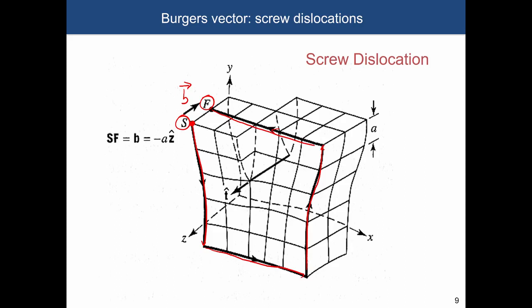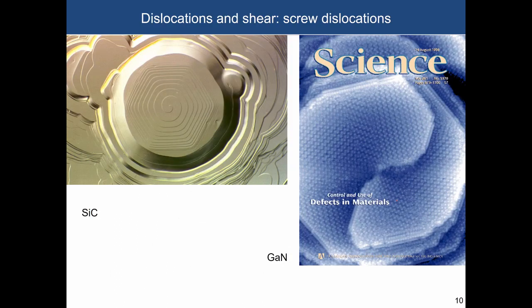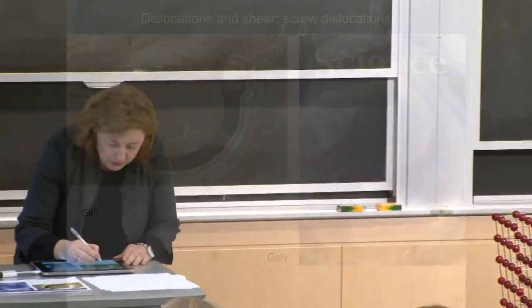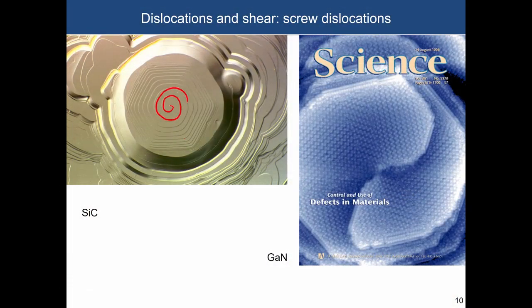For screw dislocations, you have to think about this in three dimensions. For edge dislocations, it is much easier to project into two dimensions. The name 'screw dislocation' comes from the fact that these dislocations propagate to the surface of the material and produce screw-like surface features. On the right-hand side is a scanning tunneling microscopy image of a dislocation in gallium nitride, and on the left-hand side is silicon carbide. When a screw dislocation propagates through the material because of its twist-like nature, on the surface you see features with a screw-like shape.